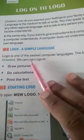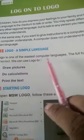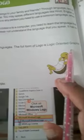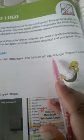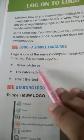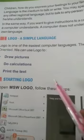Our topic is Logo, a simple language. Logo is one of the easiest computer languages. The full form of Logo is Logic-Oriented Graphic-Oriented. We can use Logo to draw pictures, do calculations, and print the text.